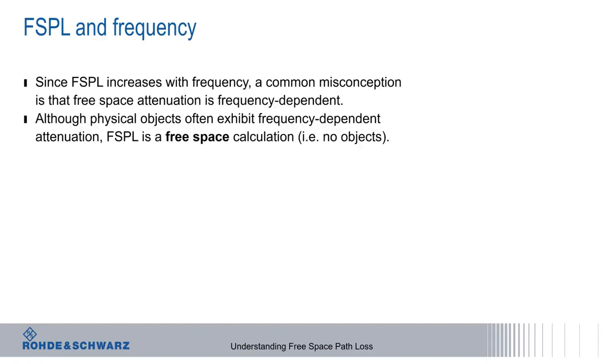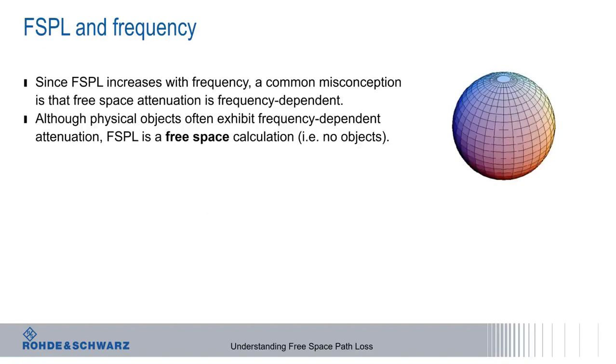First, remember that free space path loss assumes isotropic antennas at both ends. The effective aperture, or receiving area, of an isotropic antenna, a sub e, is a function of the wavelength lambda of the signal.